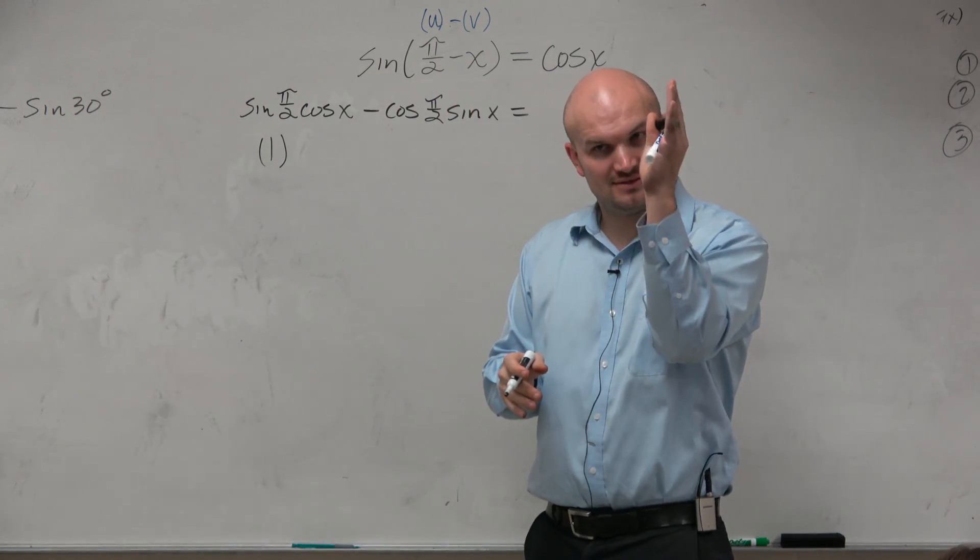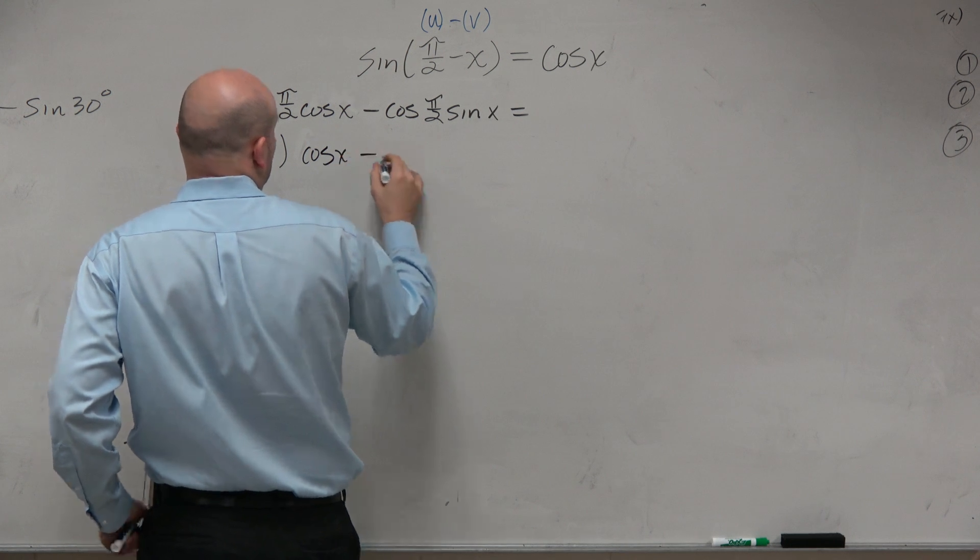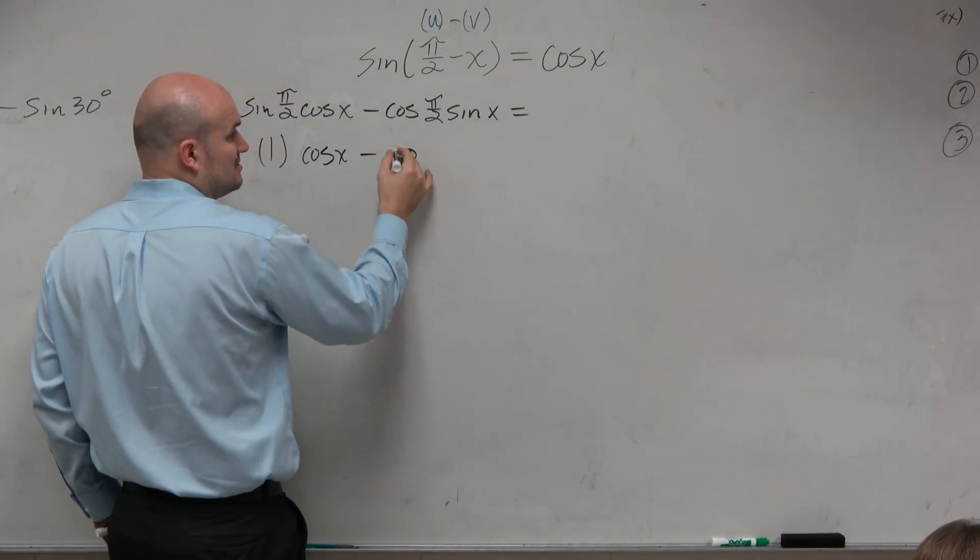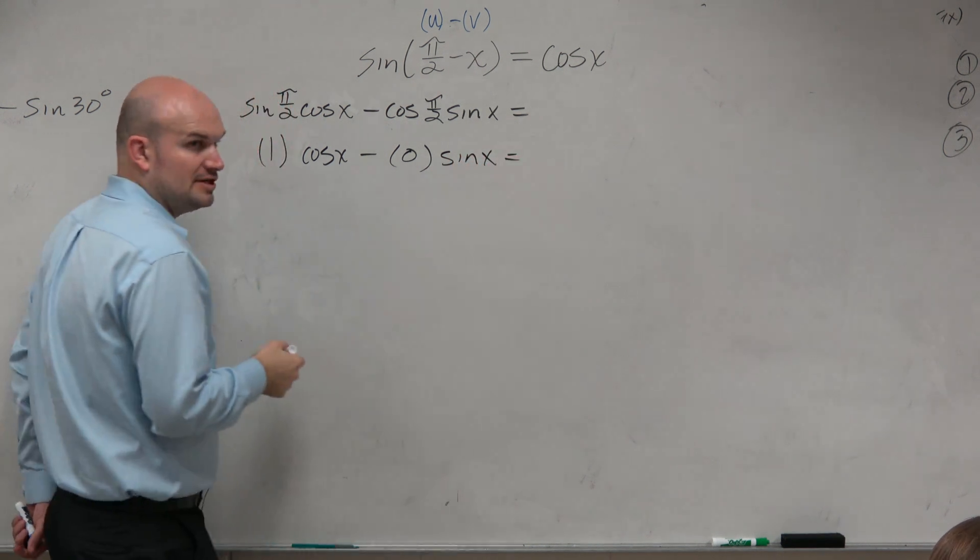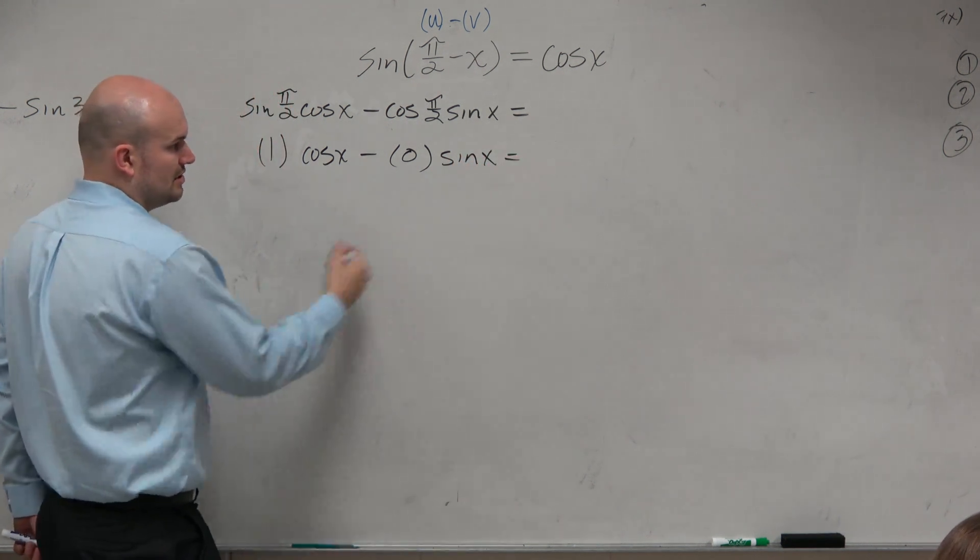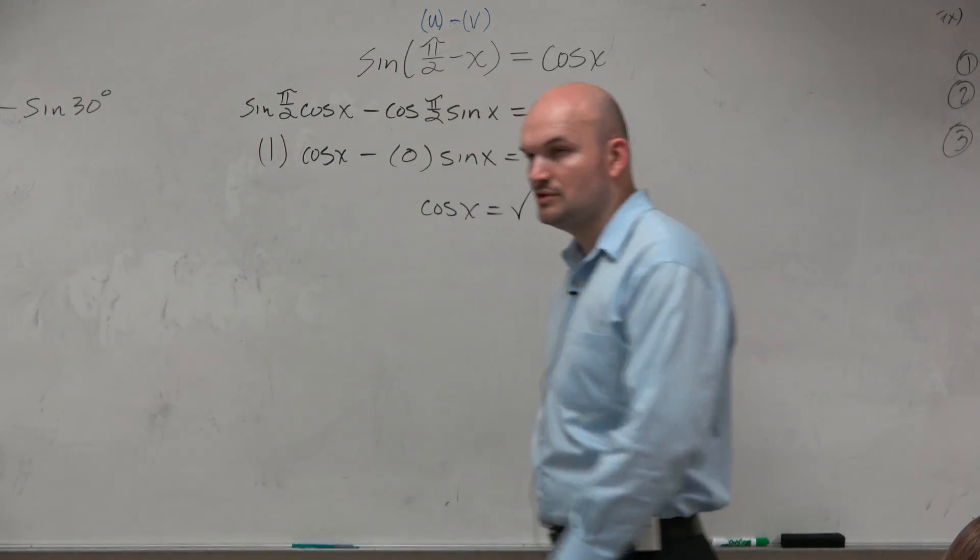Pi over 2 is the same as 90 degrees. Then we have cosine of x minus—the cosine of pi over 2 is 0—times the sine of x. Well, 0 times anything is just 0. So we're left with cosine of x equals cosine of x.